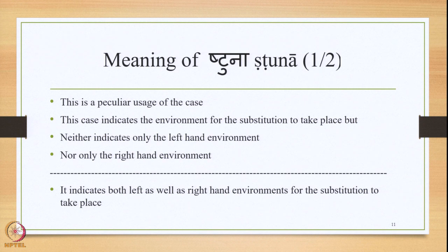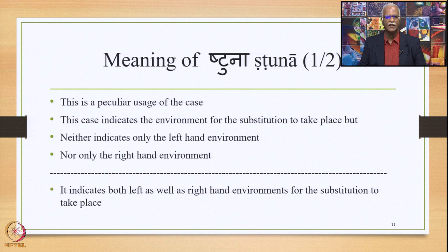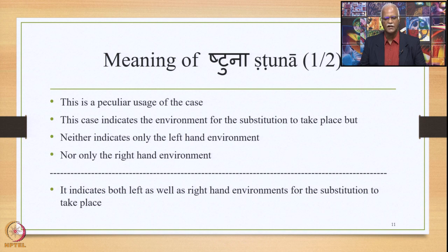Let us take a closer look at the peculiar mention of the word Shthuna. Shthuna is a very peculiar usage because this is instrumental singular stated by Panini, and this case indicates the environment for the substitution to take place. But this third case neither indicates only the left-hand side environment nor only the right-hand side environment — that was done by the fifth case and the seventh case. The third case Trutiya Vibhakti indicates both left-hand side as well as right-hand side environments for the substitution to take place.